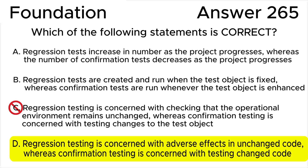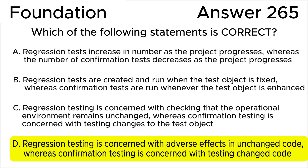Answer C is not correct because confirmation testing verifies that a defect has been fixed correctly and so is concerned with testing changes to the test object. However, regression testing ensures that changes, including changes to the operational environment, do not have negative effects on unchanged software — so it does not check that the operational environment remains unchanged.